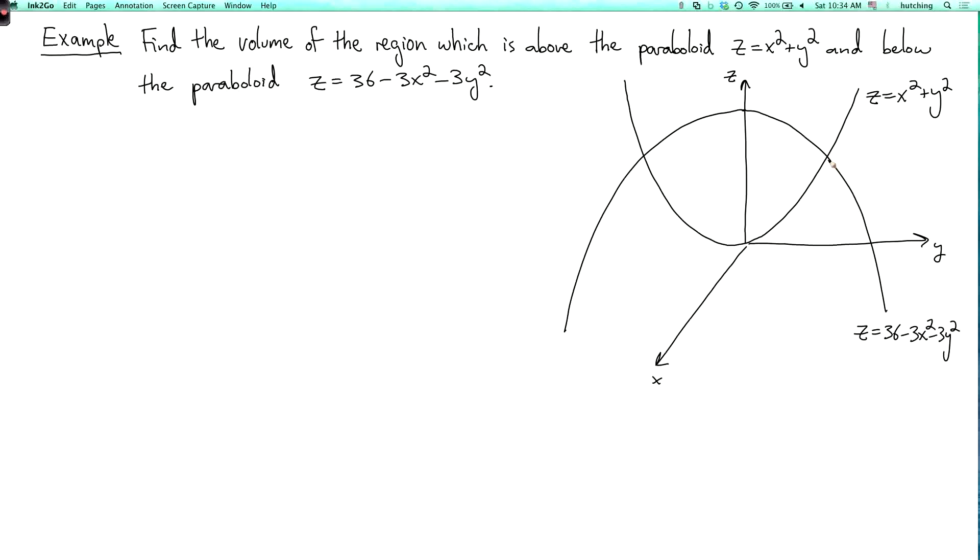This looks from the picture like these are going to intersect in a horizontal circle, which we can check later is the case. So if we let E denote the region, then the volume of E, which we want to compute, is the triple integral over E of 1 with respect to volume.